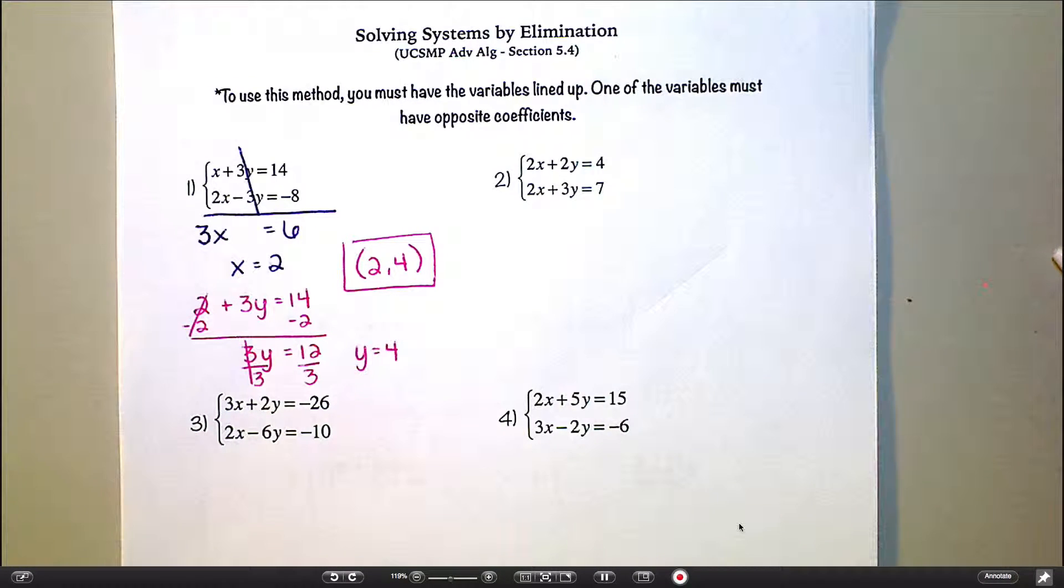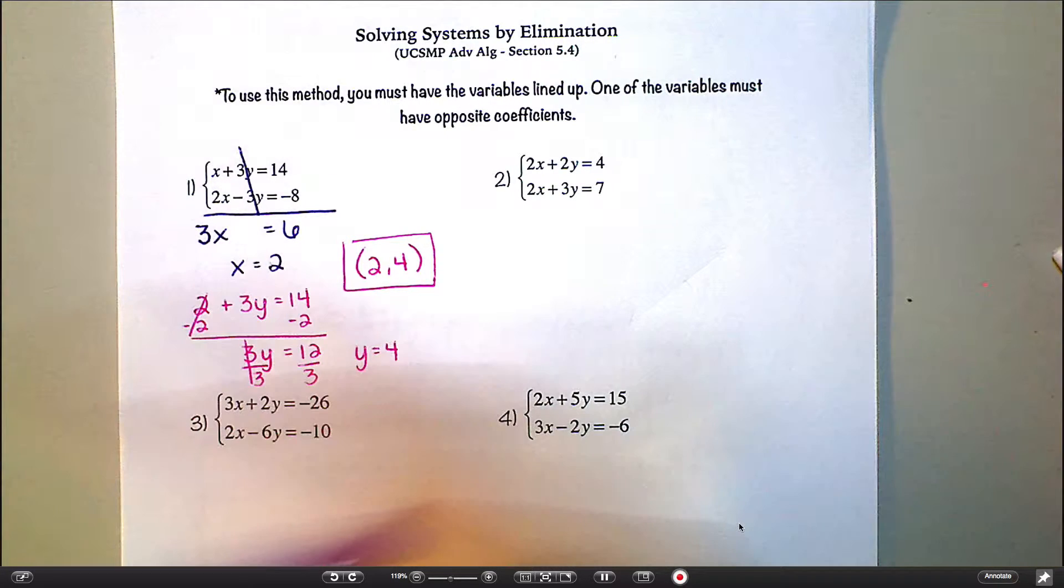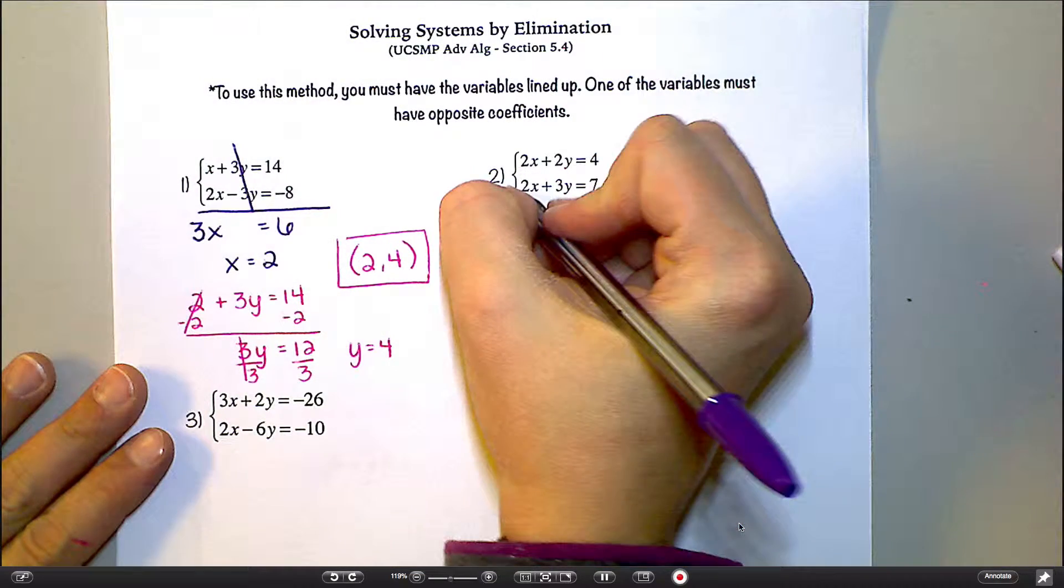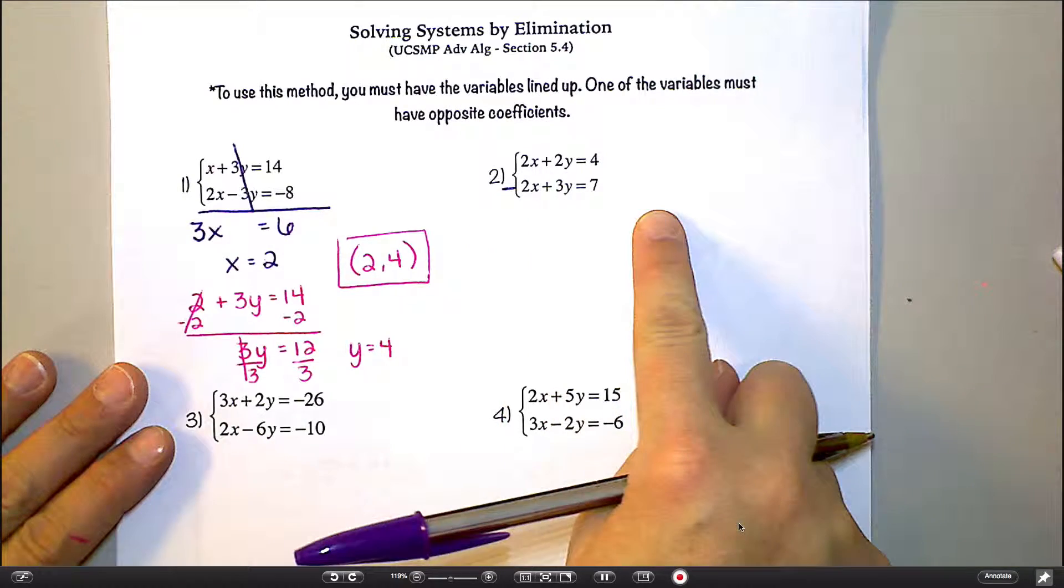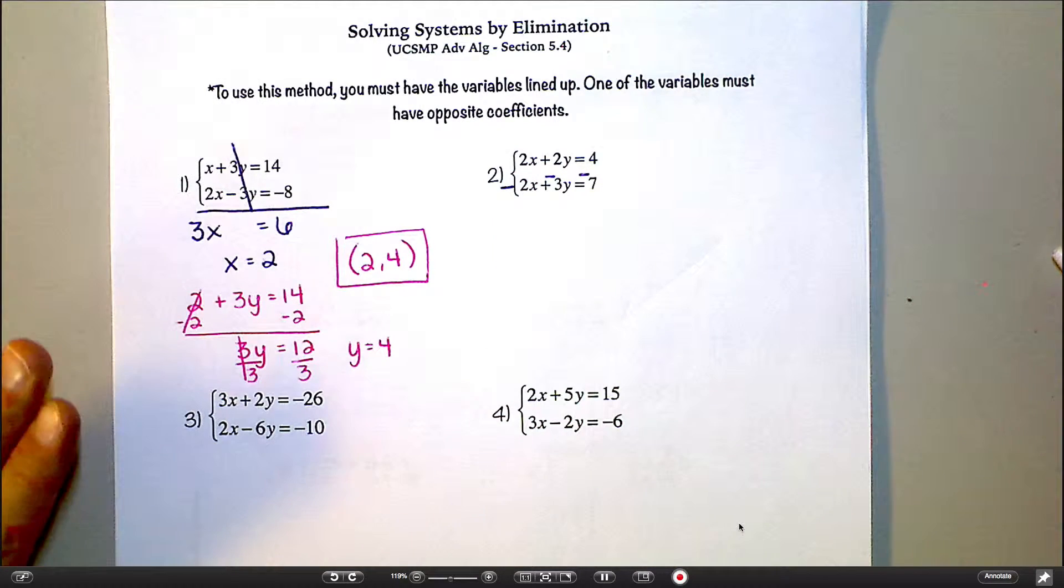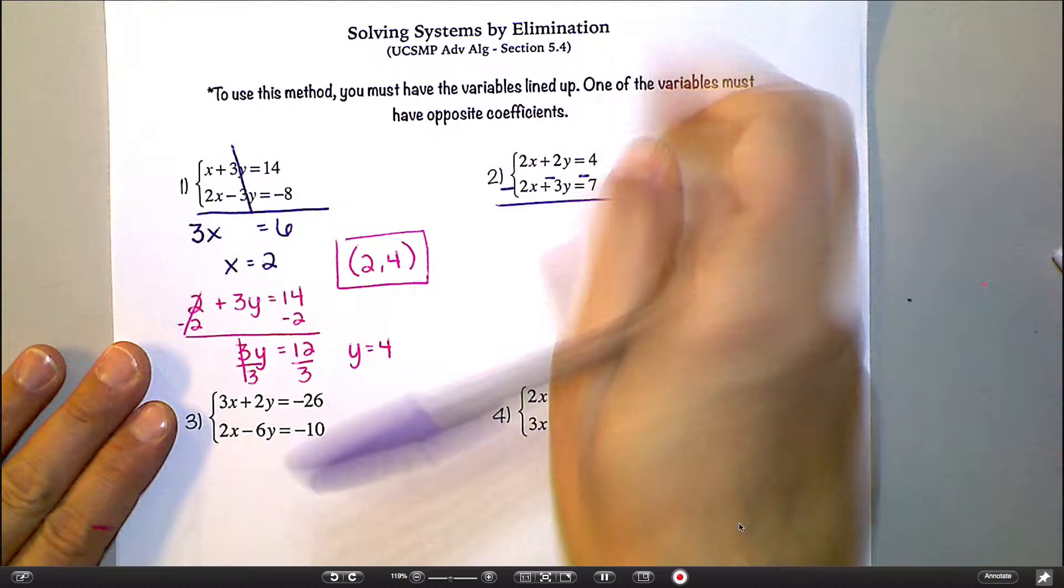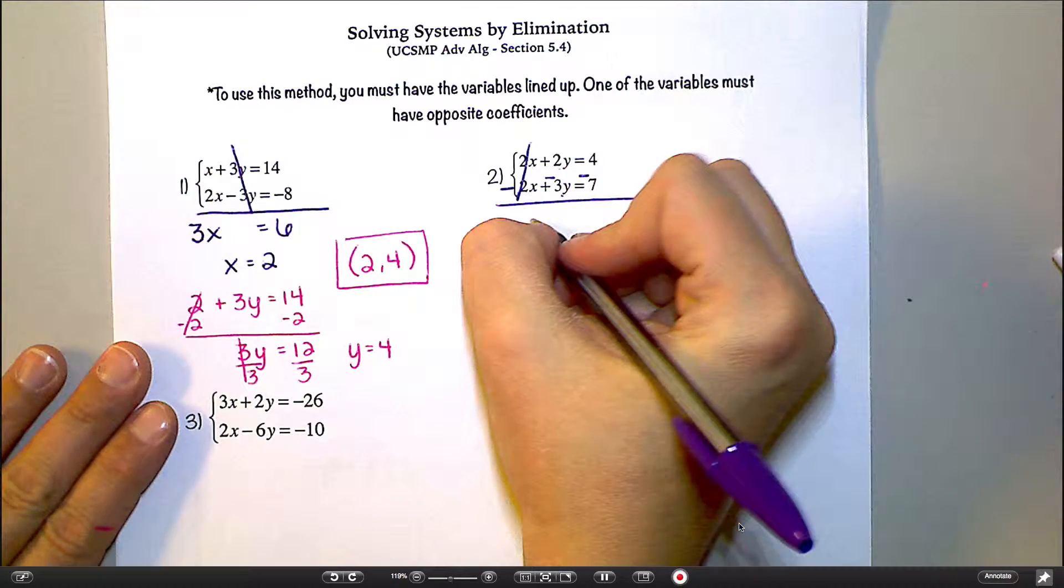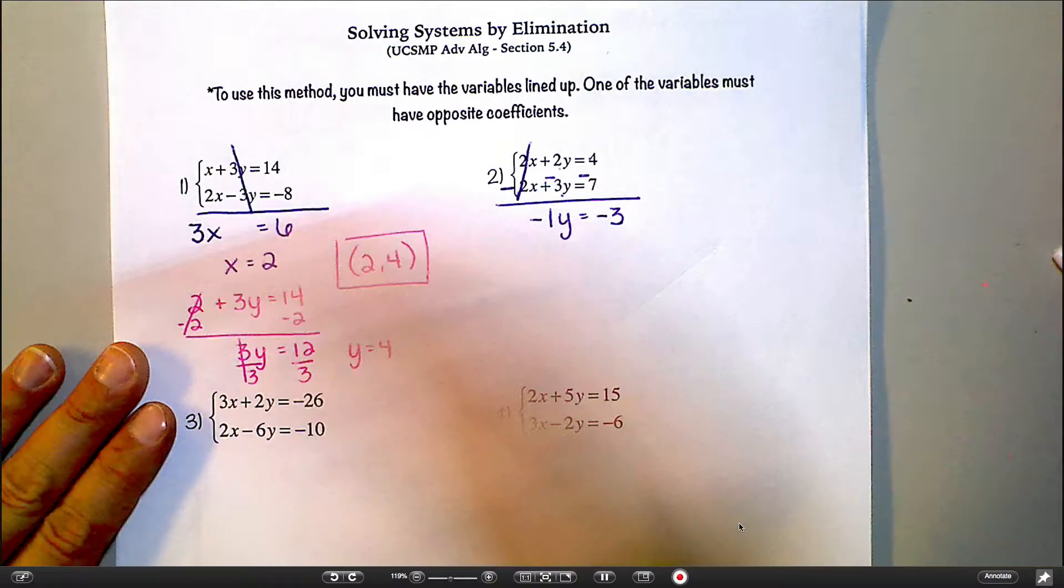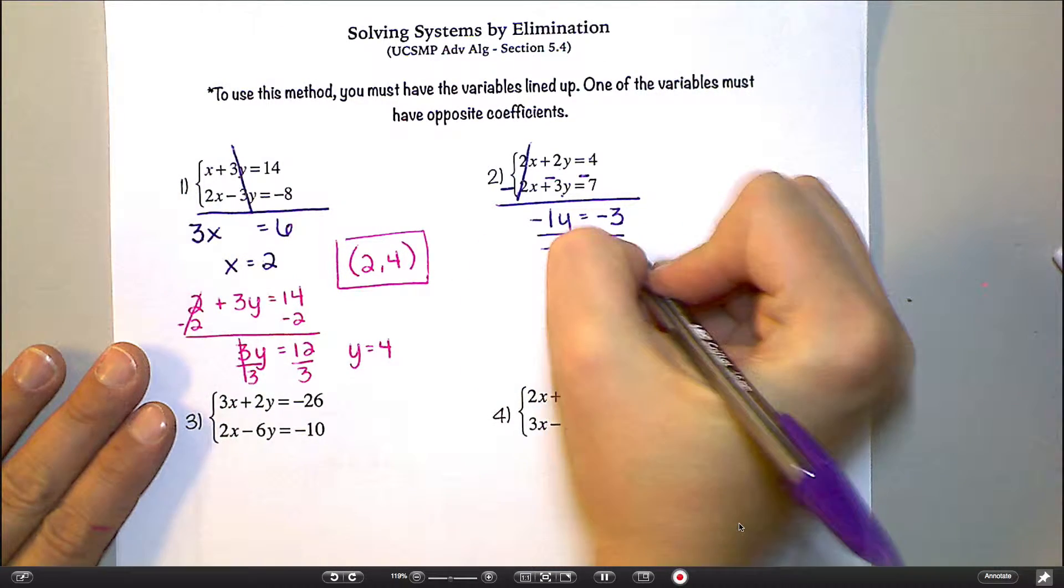Okay. Looking at the second one. If I add together right now, is something going to cancel? No. But I'm really close. What do I wish? I sure wish what? That one of those twos was negative, right? Exactly. I can make it negative. If I want it to be negative, I'm going to make it negative. But that means that I have to do the same thing for everything in that equation. So I need to make this a negative 3y, and I need to make this a negative 7. So you're allowed to make it whatever you want as long as you do the same thing for the whole equation. So now when I add together, 2 and negative 2 cancel. 2 plus negative 3 makes negative 1. And 4 plus negative 7 is negative 3. Let's divide by negative 1. Divide by negative 1, and I get that y is equal to 3.